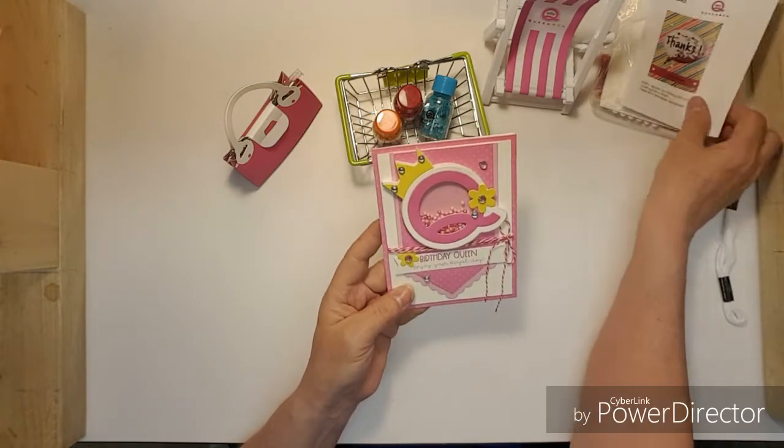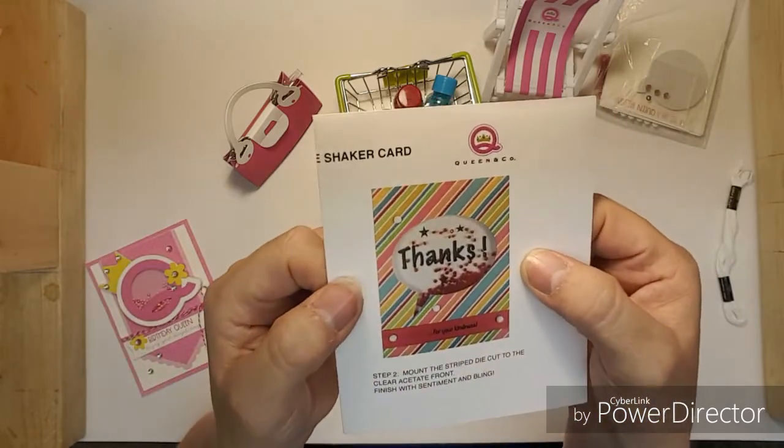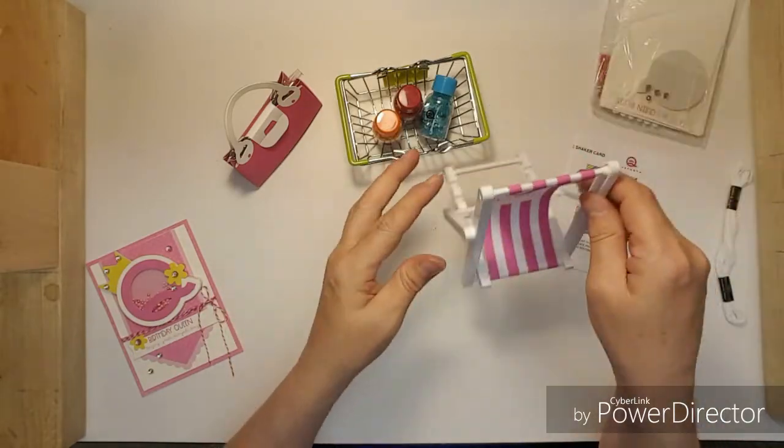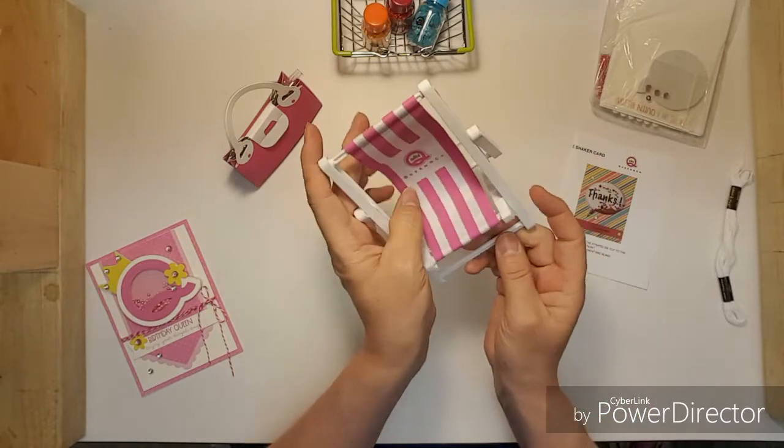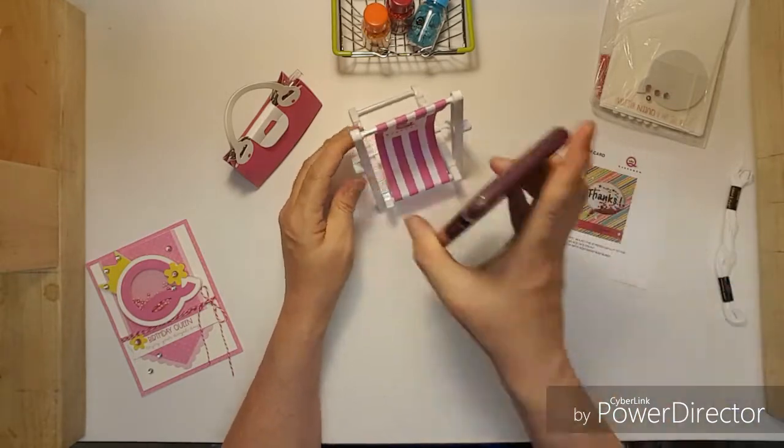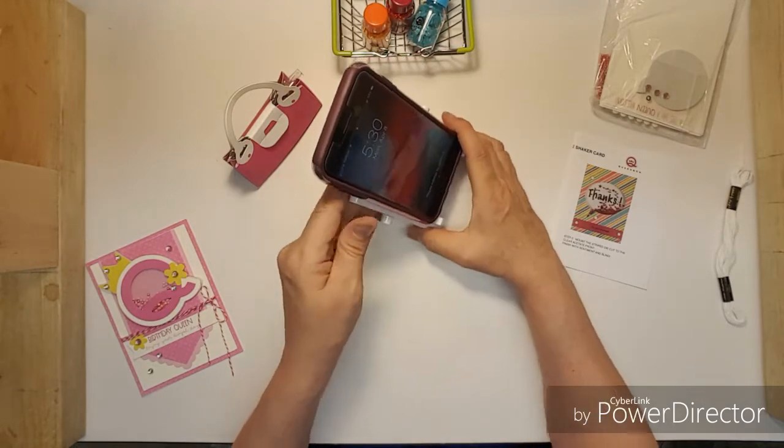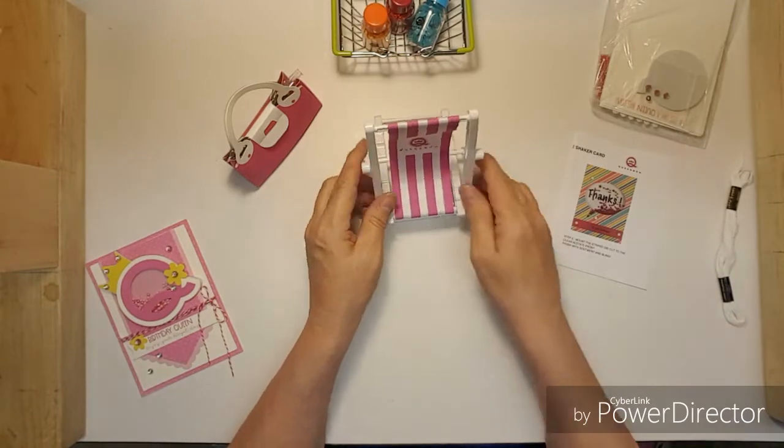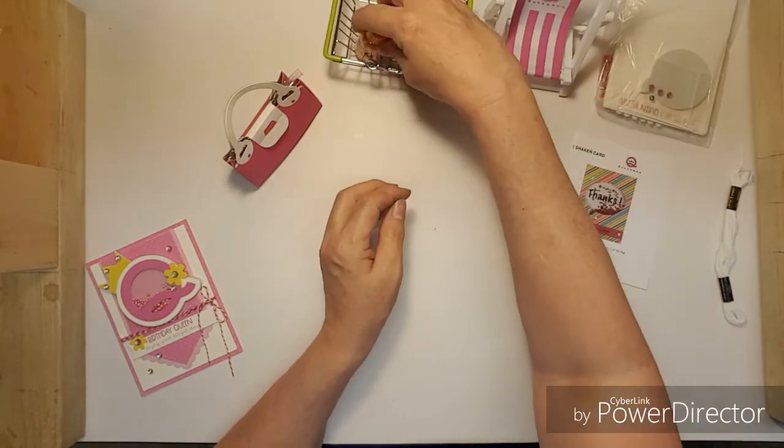And then also in our kit we got materials to make this card and then also we got this cute little chair and it sets your phone in it, kind of like that. It is adorable, it's like a little lounge chair.